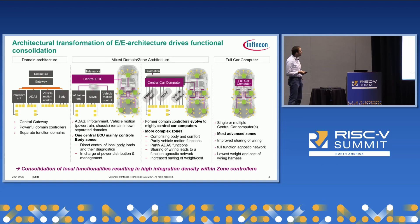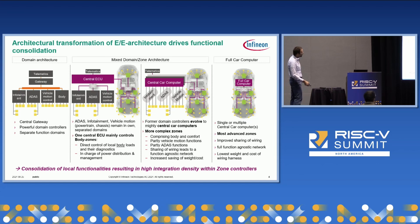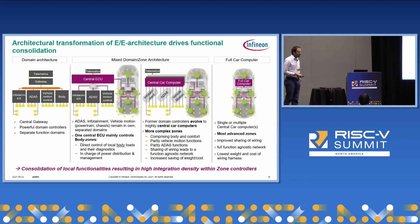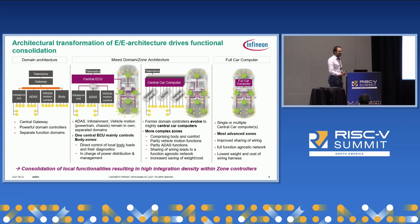What you see here on the slide is a transition from a so-called domain architecture to a fully zonal and full car computer architecture. The difference is basically you are starting with a rather ECU-centric and distributed in-vehicle network where you have dedicated domains for infotainment, ADAS, and vehicle motion control.